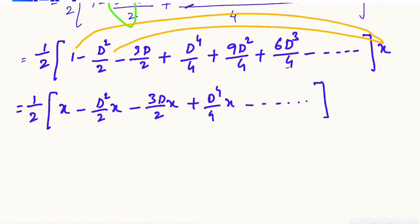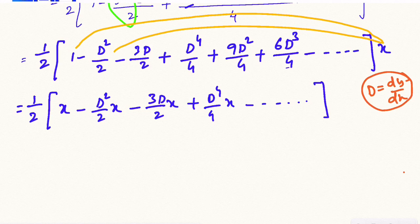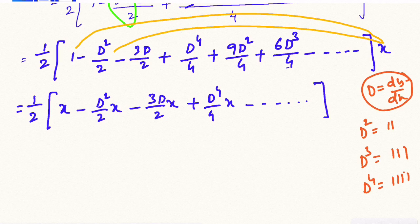If it is D, it is a single differentiation. If it is D², it is a double differentiation. If it is D³, it is a triple differentiation. If it is D⁴, it is a 4-times differentiation.